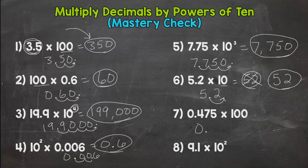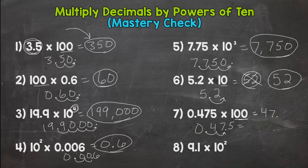Number 7, we have 0.475 times 100, so we have two zeros. So we need to push everything to the left twice, and we do that by moving the decimal twice to the right. And the decimal is now between the 7 and the 5, so we get 47.5.